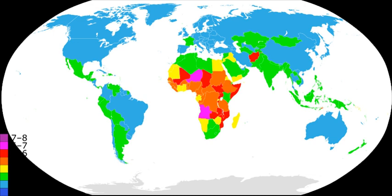Paul R. Ehrlich, a U.S. biologist and environmentalist, published The Population Bomb in 1968, advocating stringent population planning policies. His central argument: 'A cancer is an uncontrolled multiplication of cells; the population explosion is an uncontrolled multiplication of people. Treating only the symptoms of cancer may make the victim more comfortable at first, but eventually he dies, often horribly. A similar fate awaits a world with a population explosion if only the symptoms are treated.'